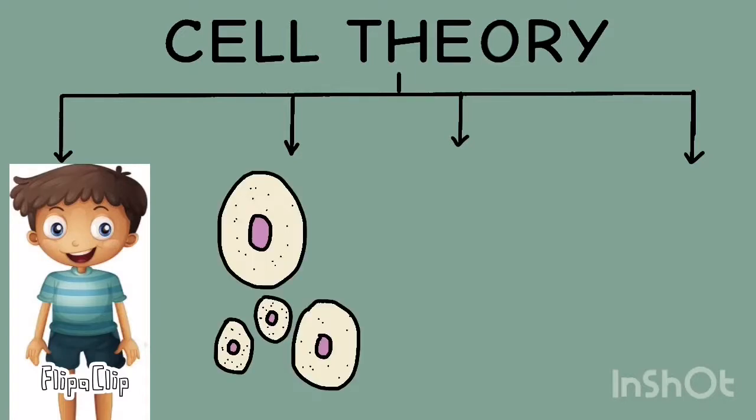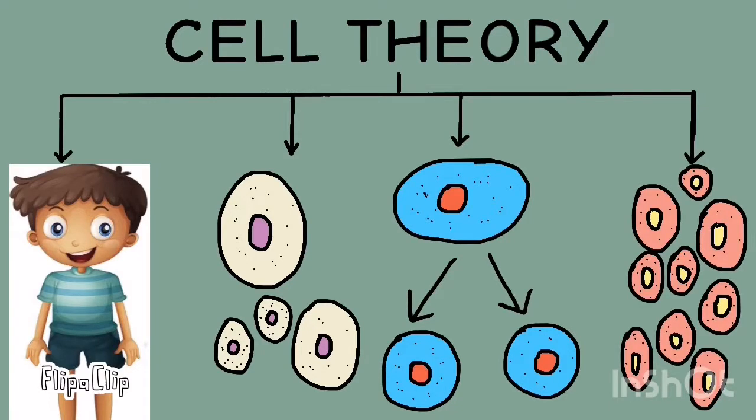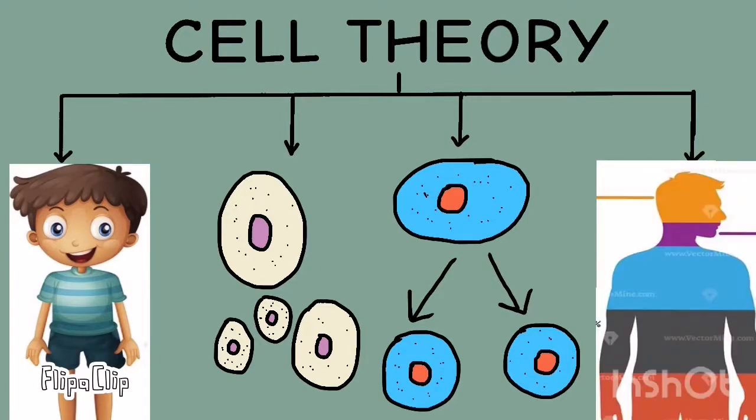All cells are similar in their basic structure and function, but are not identical. They differ in size and shape. New cells are formed due to division in old cells. Organization of cells in the body of living organisms determines its structure.